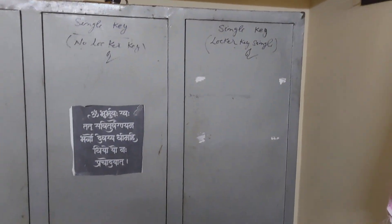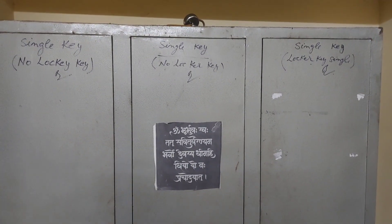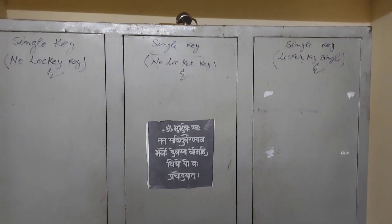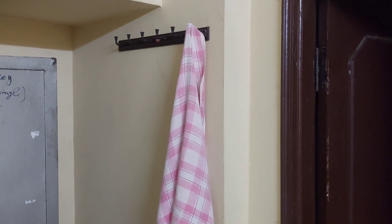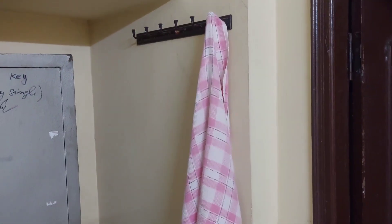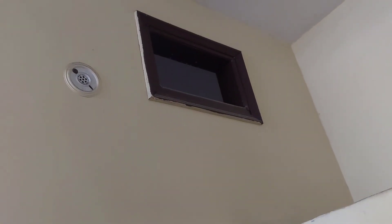I have three almirahs — this is more than enough storage. There is also a hangar where you can hang clothes. This is the third wardrobe area. There is also a vacuum and windows in the room.